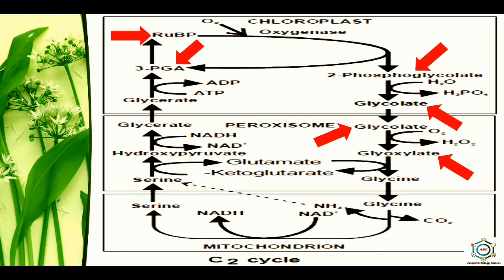The glyoxylic acid (also called glyoxylate) is converted into the amino acid glycine by a transamination reaction catalyzed by enzyme glutamate-glyoxylate transaminase. The H2O2 produced is destroyed by enzyme catalase, releasing water molecules and oxygen — so H2O2 is converted into H2O and O2. This glycine is then transported out of the peroxisome into the mitochondria.